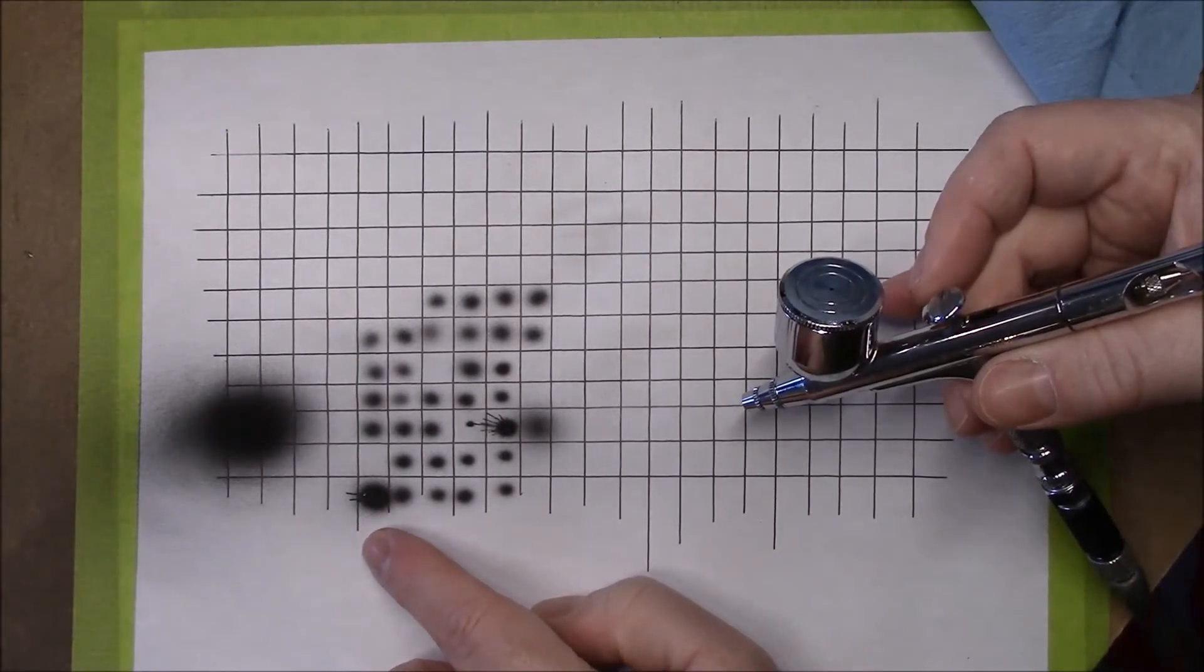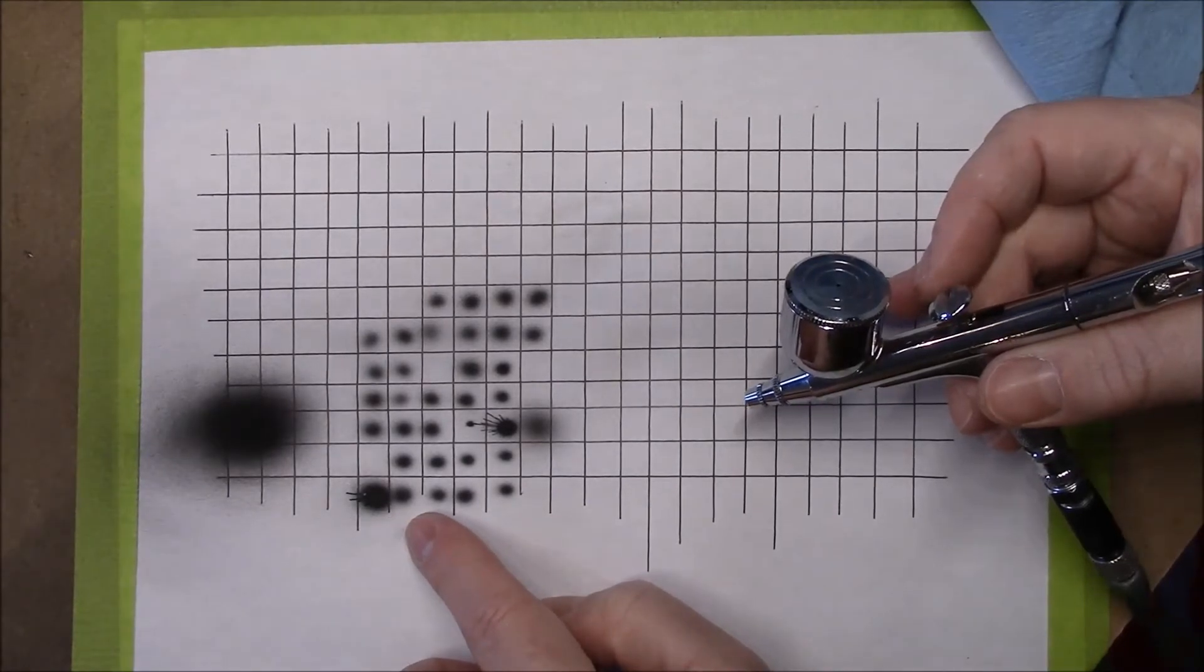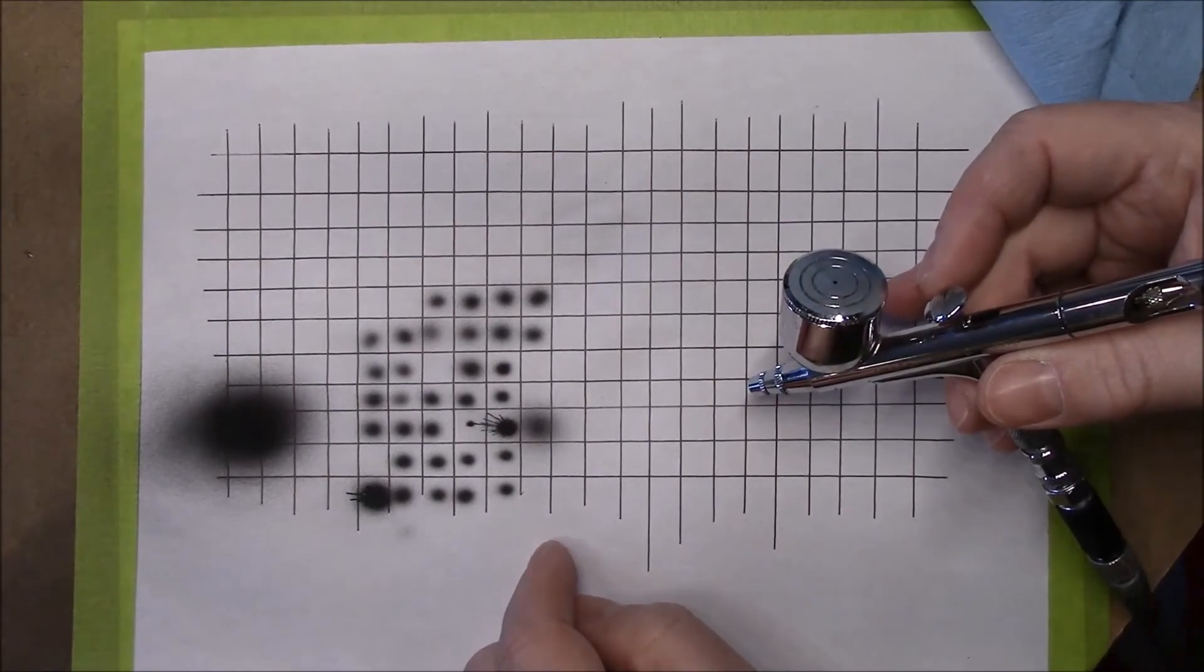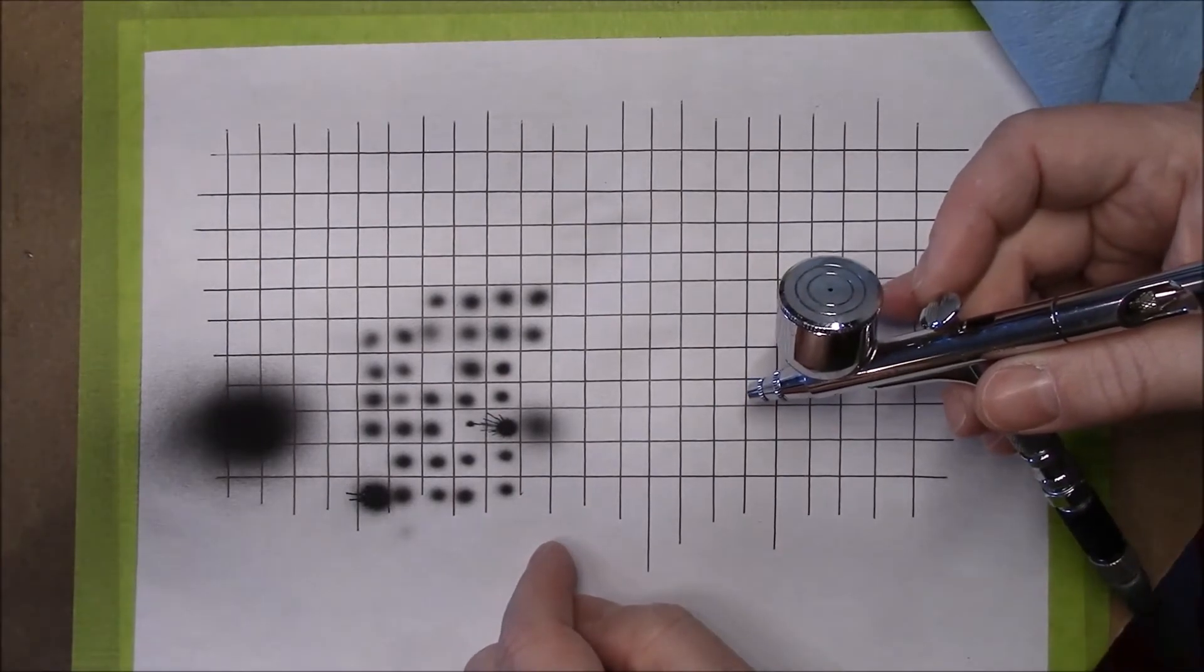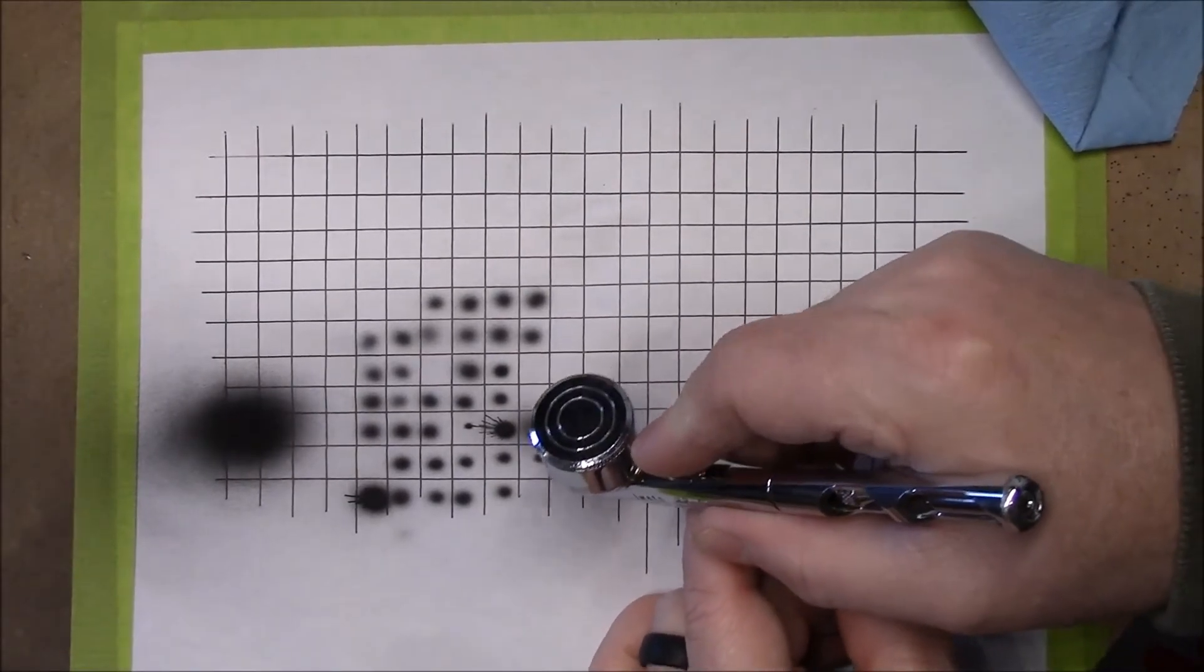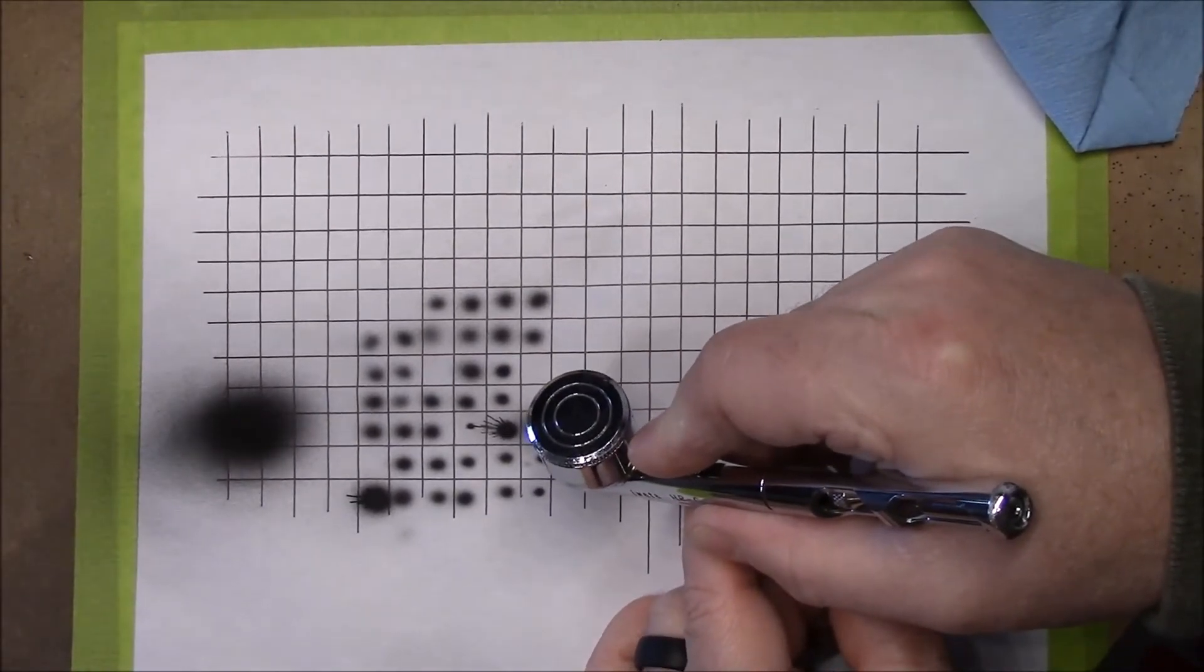So I did airbrush, airbrushed t-shirts for a while, and then I switched over to airbrushing, like scale models and stuff. And it was a disaster, because I wasn't used to having to control the airbrush so much. But on scale models and miniatures, you have to be pretty precise with stuff.